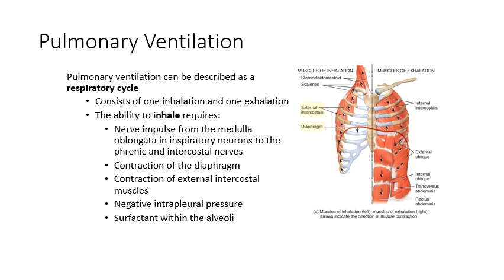Contraction of the diaphragm is going to pull the diaphragm down; contraction of the external intercostals is going to pull your ribs up. That combination of pulling the diaphragm down and pulling the ribs up creates more space inside the thoracic cavity, giving us a negative intrapleural pressure. In addition to that, we're also going to need surfactant being present inside the alveoli — that substance created by type 2 alveolar cells that helps prevent the alveoli from collapsing.